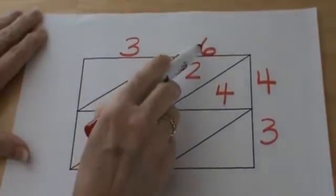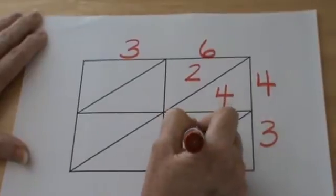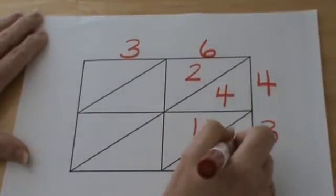Next I multiply 6 times 3 and I get 18. So the 1 goes in the tens place and the 8 goes in the ones place.